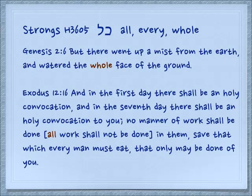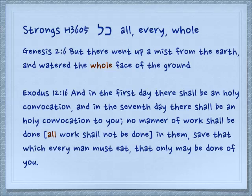Genesis 2:6: 'But there went up a mist from the earth and watered the whole face of the ground.' Exodus 12:16: 'In the first day there shall be a holy convocation, and in the seventh day there shall be a holy convocation — no manner of work shall be done.' Literally in Hebrew it's written: all work, kol, shall not be done, save that which every man must eat.